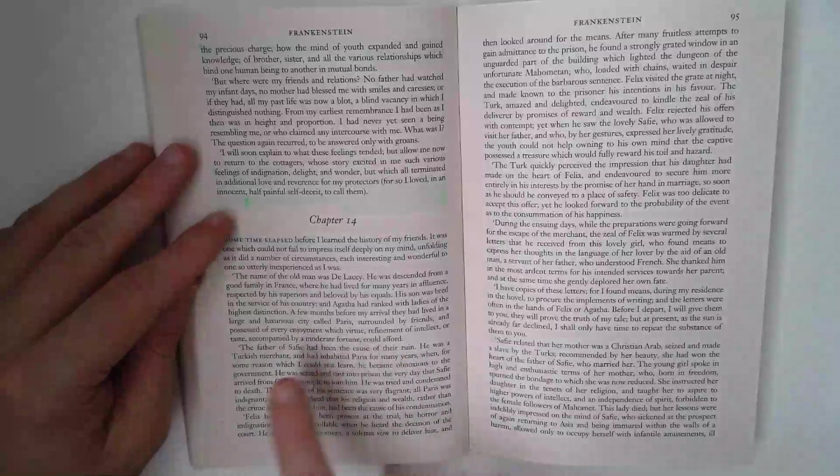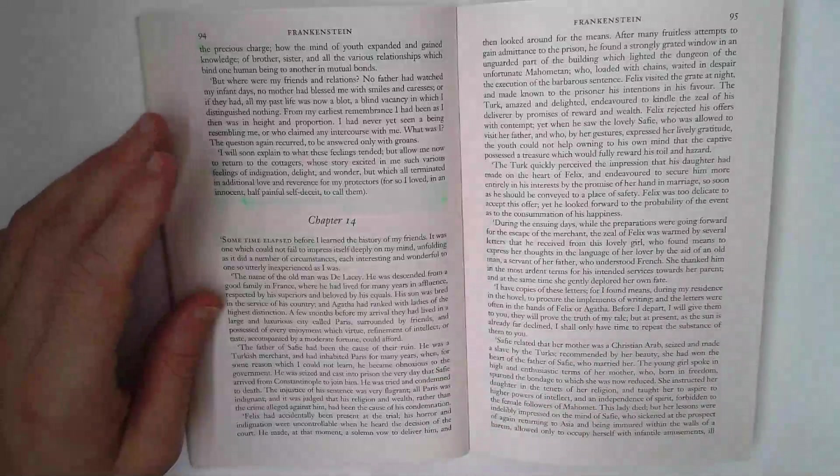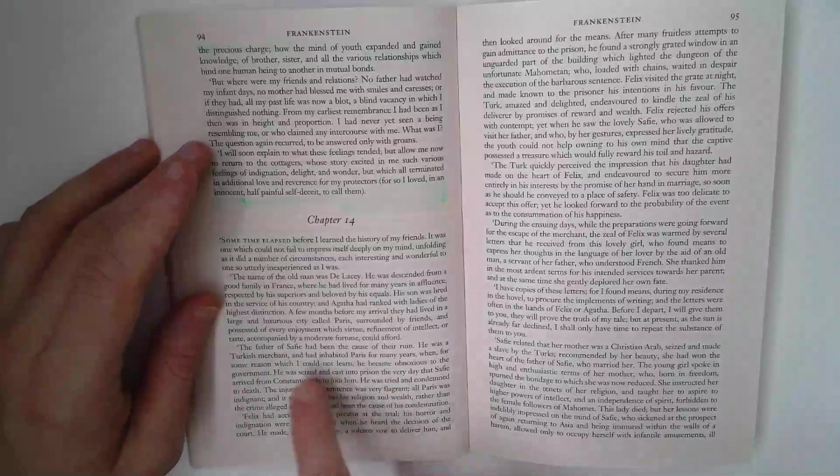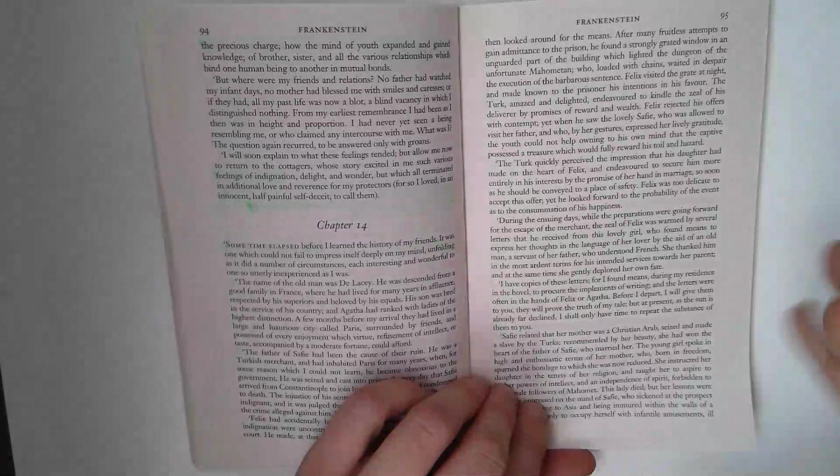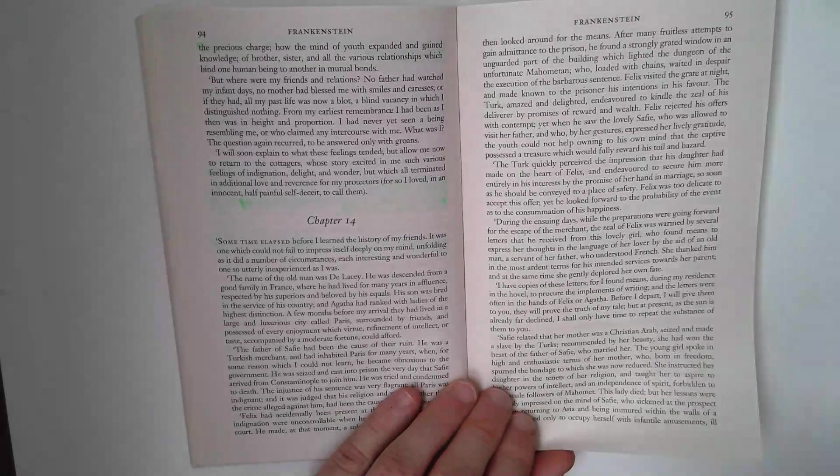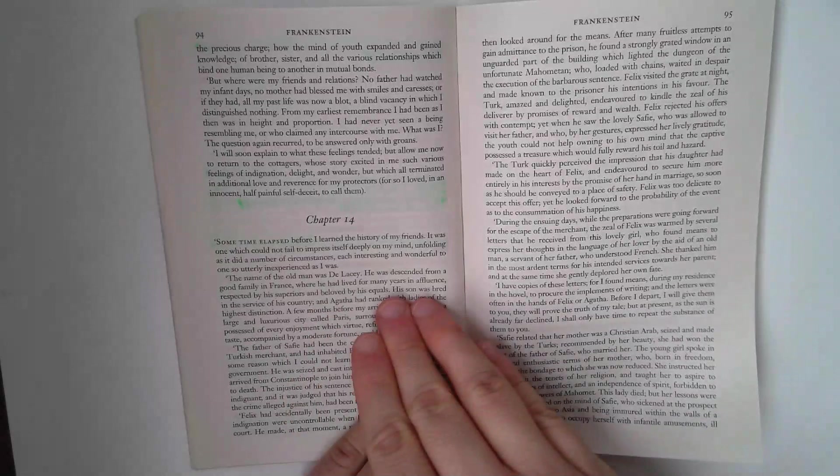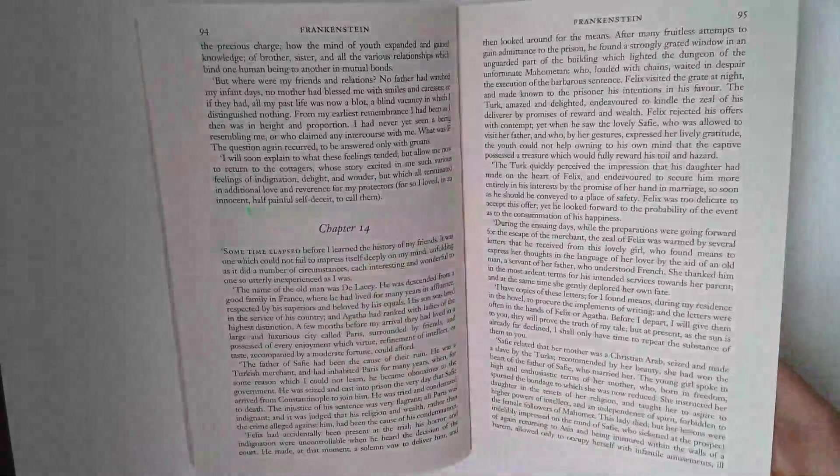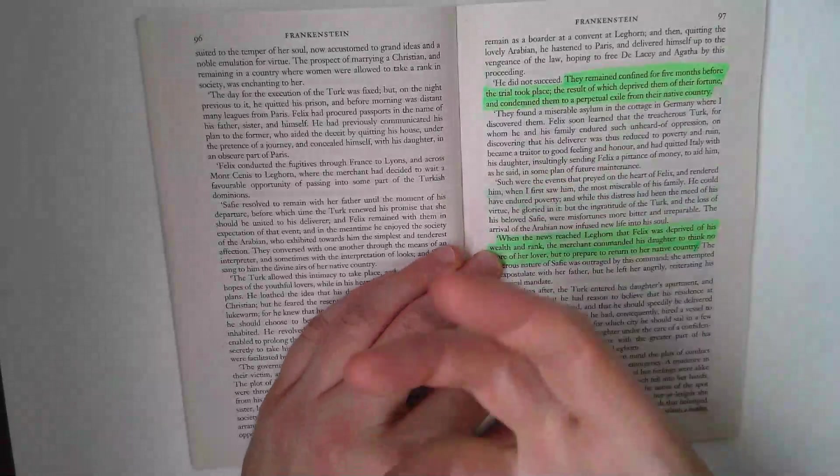We see the relationship between DeLacy and Safi's family. Safi's father has been put in prison, tried and sentenced to death. The DeLacy's and Felix try to help, which brings about the downfall of DeLacy and shows a noble nature in the DeLacy family. It's worthwhile reading and it contrasts with Victor's own family really.